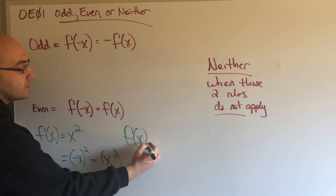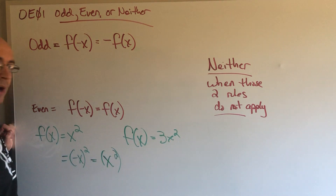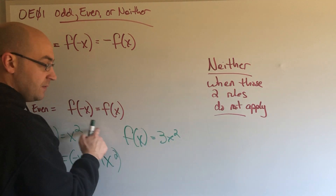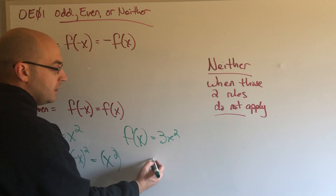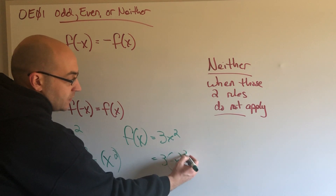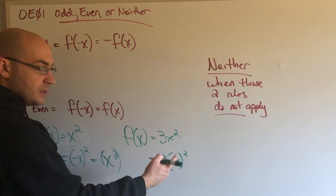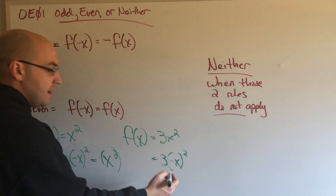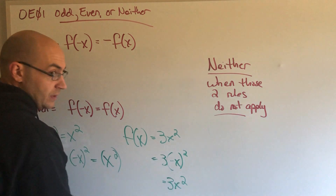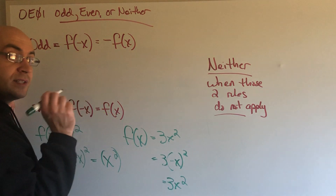Let's do f of x equals 3x squared. If I were to replace every time I see x with a negative x, I should get what I started with. So 3 times negative x squared — negative x squared is x squared, because negative x times negative x is x squared — so 3x squared is what I end up with, because the 3 has no bearing on this. That is an even function, because it's the same thing.